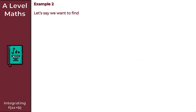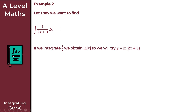Let's have a go at Example 2. We want to integrate 1/(2x + 3) with respect to x. We know that if we integrate 1/x, we obtain ln x. So we'll try y = ln(2x + 3) — that's just the log of our denominator. If y = ln(2x + 3) and we differentiate with respect to x, we obtain dy/dx = 2/(2x + 3).